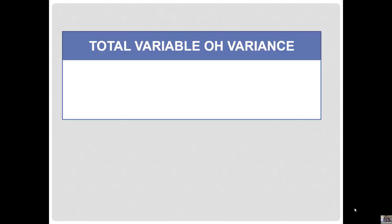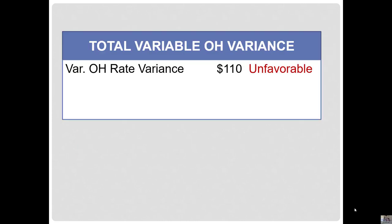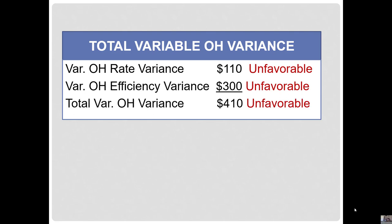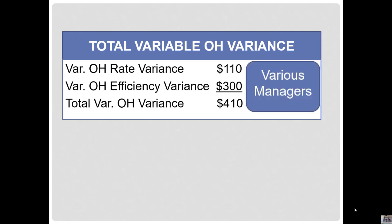Summarizing our variable overhead variances: the rate variance was $110 unfavorable and the efficiency variance was $300 unfavorable, so we spent $410 too much on variable overhead costs. This will be the responsibility of various managers.